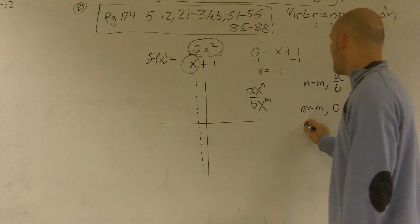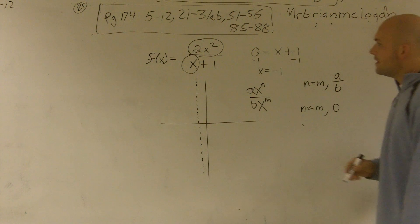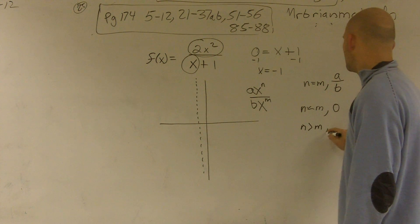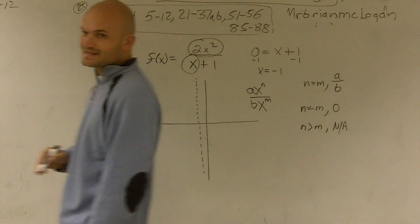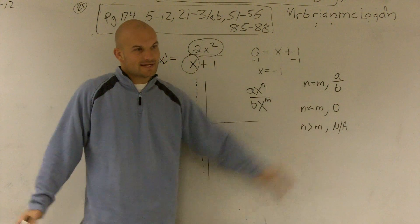And then when we have n is greater than m, we don't have a horizontal asymptote. It's not available. There's no horizontal asymptote.